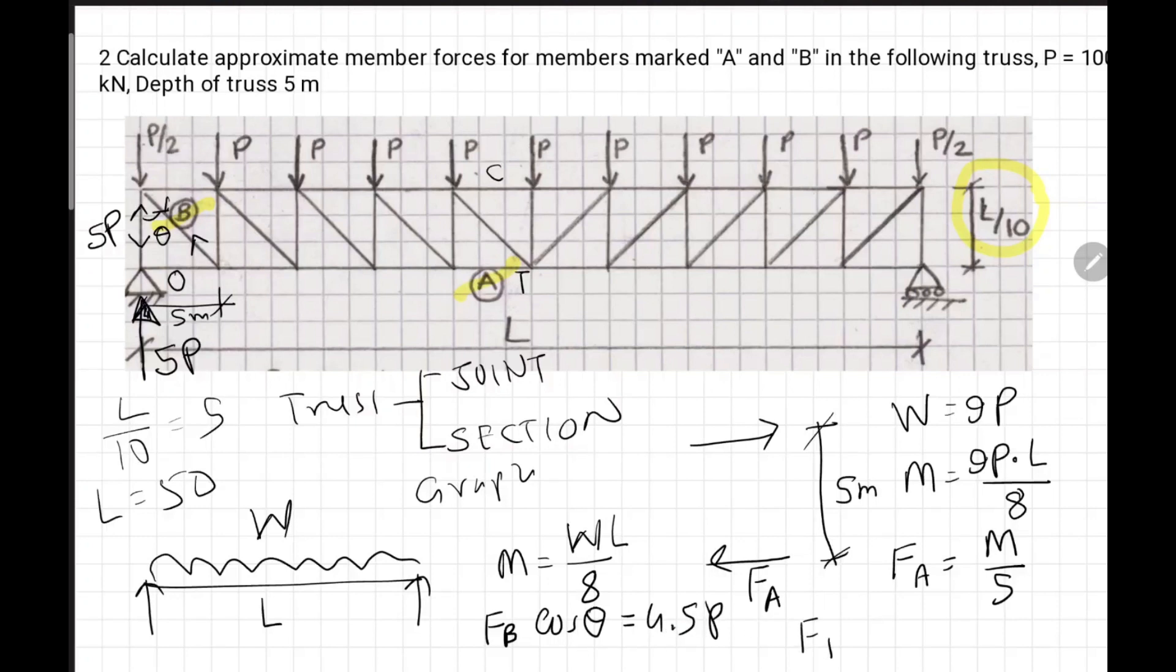We can get F_B equals 4.5P over cos theta, which will be 0.707. This is how we can calculate approximately forces in a truss.